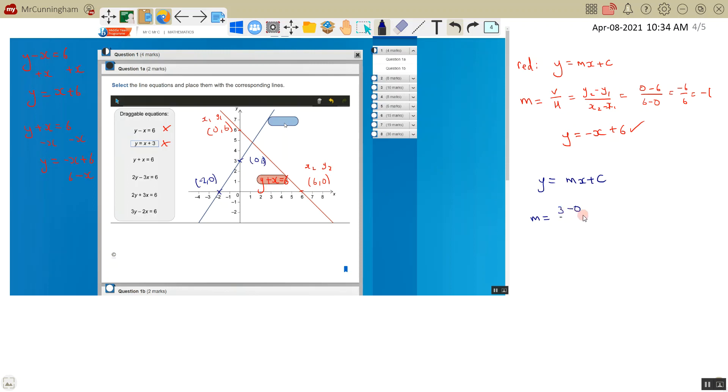That's 3 over (0 take away -2). Put it into the calculator if you want—that's 3 over 2. So I get y equals 3/2 x plus 3, and our y-intercept is 3.